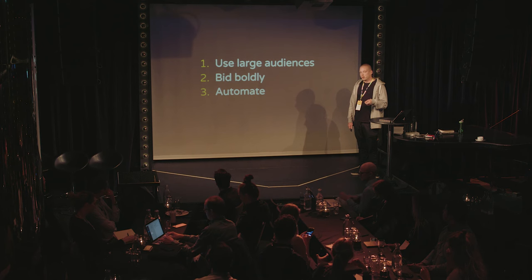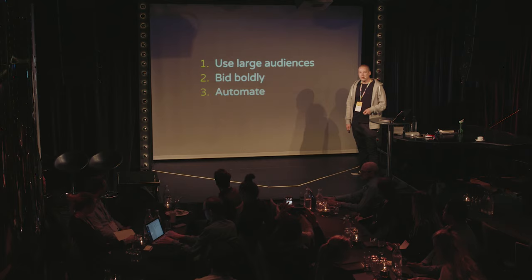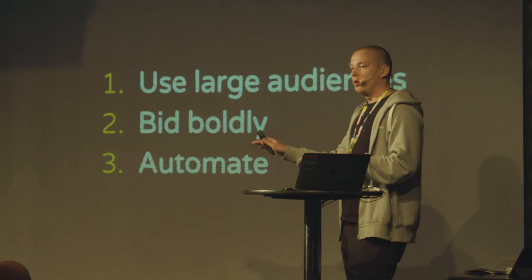There are three things I'm talking about today to get the full gains of the Facebook ecosystem. One: use large audiences, since splitting audiences is usually a bad idea. Two: bid boldly - many delivery issues and bad performance come from not bidding boldly enough. There's a huge gap between Google and Facebook where bid is really important versus Facebook where I might not even touch the bid more than once a week. Three: automate as much as possible.